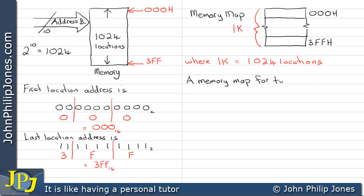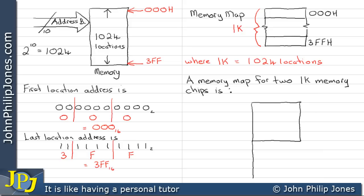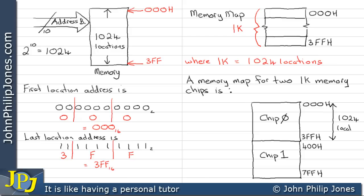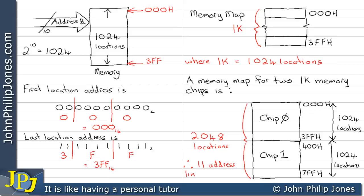A memory map for two 1K memory chips will look as follows. We draw the first chip area, then the second chip area, and label them chip 1 and chip 0. We label the first and last address for each chip. Each chip area represents 1024 locations, giving 2048 different locations in total. Therefore, we will need 11 address lines to address two 1K chips.